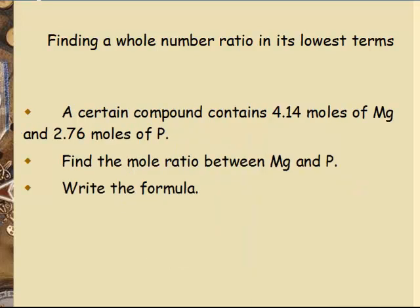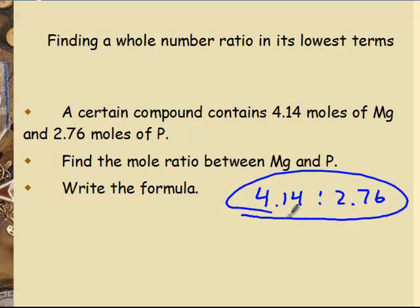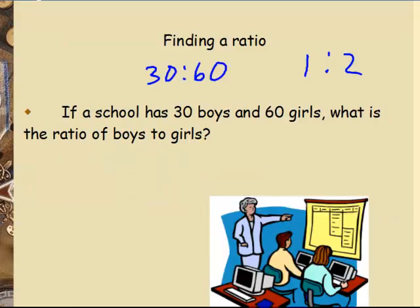But what about this one? Now this is really the chemistry part of this. A compound contains 4.14 moles of Mg and 2.76 moles of P, phosphorus. So now it's a 4.14 to 2.76 mole ratio, and I don't care how good you are at math, you can't do this like you did the last few where you're recognizing what its whole number multiple would be. And so we have to have a trick.